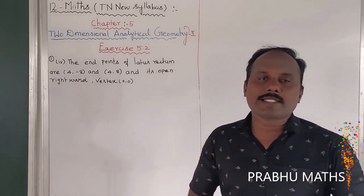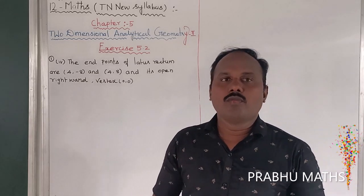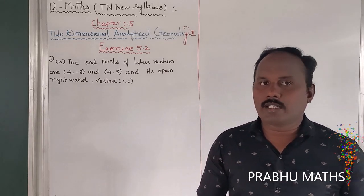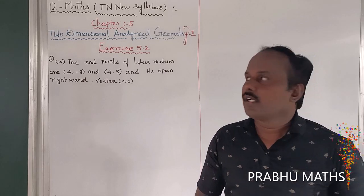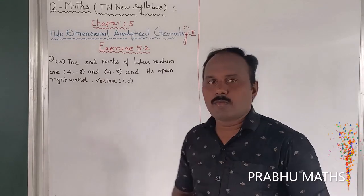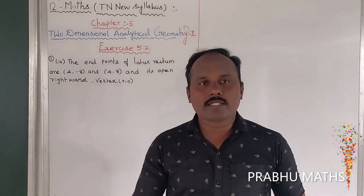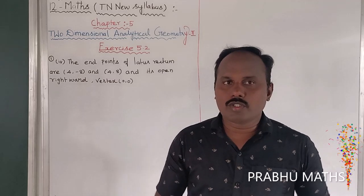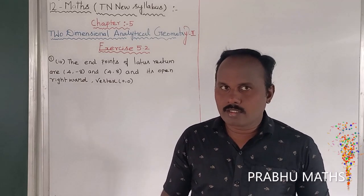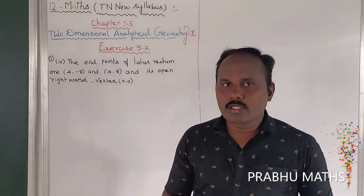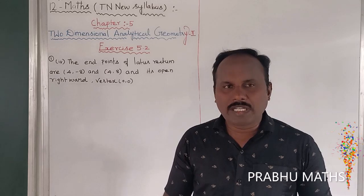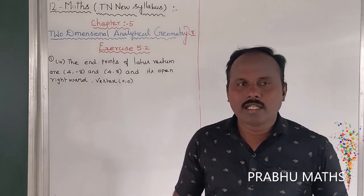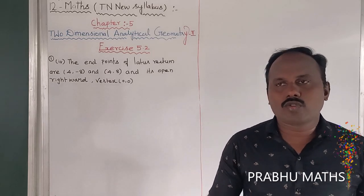For an open rightward parabola, the formula is (y - k)² = 4a(x - h). Since the vertex (h, k) = (0, 0), this simplifies to y² = 4ax.